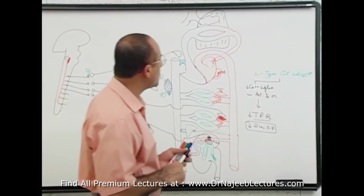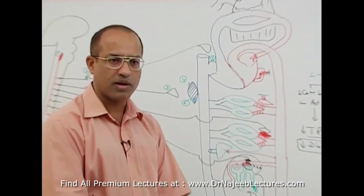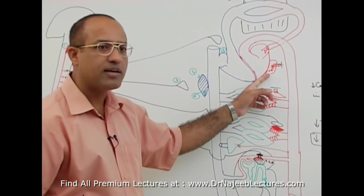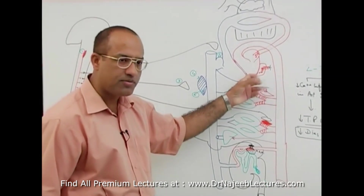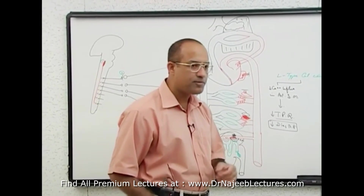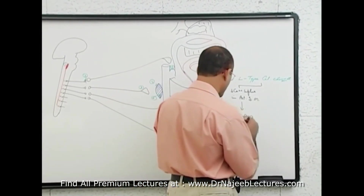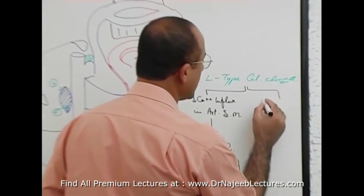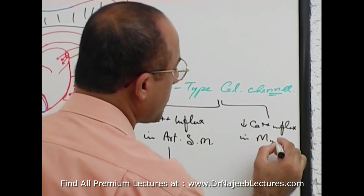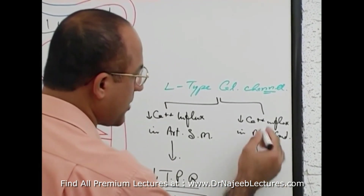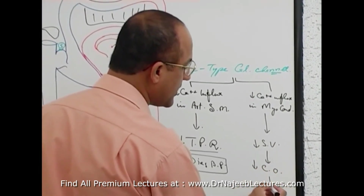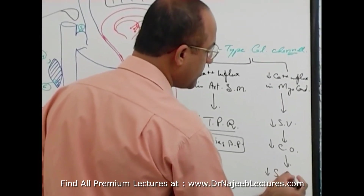Secondly, calcium channel blockers also block calcium channels on the ventricular myocardium. When those calcium channels are blocked, calcium influx in myocardial cells is reduced, eventually leading to reduced contractility of the myocardium. When myocardial contractility is reduced, stroke volume is reduced. Reduced calcium influx in the myocardium leads to reduced stroke volume, which leads to reduced cardiac output, and that eventually leads to reduced systolic blood pressure.